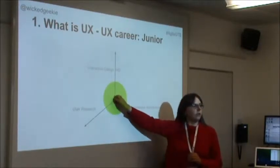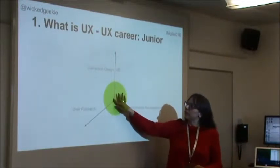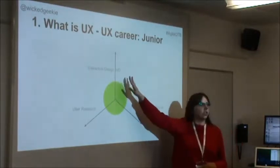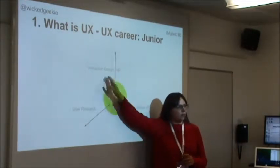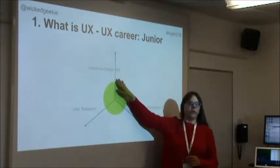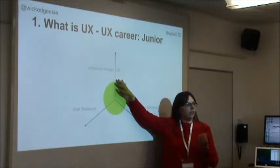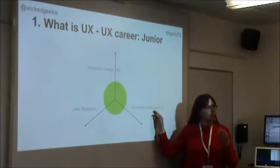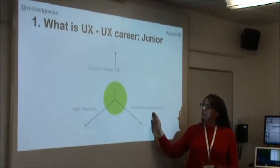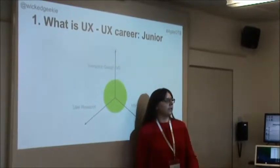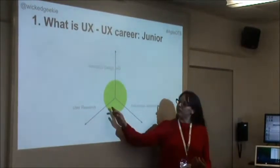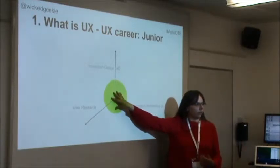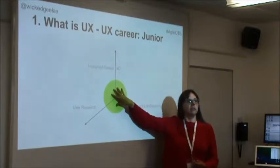When a junior UXer starts their career, they're expected to have all three disciplines under the hood. They start small. If you take somebody who's just done a two-month course at General Assembly, they would start really tiny. If they've done a master's in user experience design, they've got all three — solid information architecture, interaction design, and user research. They may be naturally better at one of these things, more interested in visuals, or in organizing content, or in people. But as a junior, they should have all three covered.